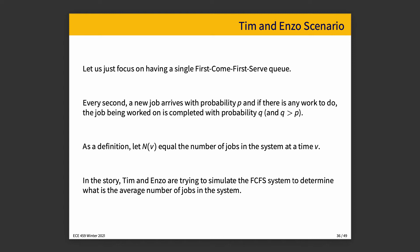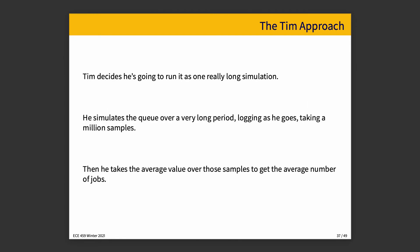In this story, we have two people — TAs, Tim and Enzo — trying to simulate this first come, first serve system to make a determination about the average number of jobs in that system. Tim decides he's going to run it as one really long simulation: start it up, let it run for a very long time, periodically take samples to identify the state of the queue — how many items are in the backlog. In the end, he takes the average over all of the samples from this one long run, and that's how he produces his average number of jobs in the system.